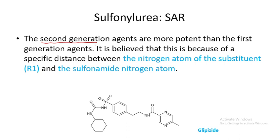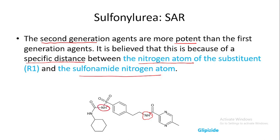The second generation agents are more potent than the first generation agents. It is believed this is because of a specific distance between the nitrogen atoms — specifically between the sulfonamide nitrogen atom and the subsequent nitrogen atom. This specific inter-nitrogen distance is critical for lead compound optimization and accounts for the greatly enhanced potency of second generation sulfonyl ureas.